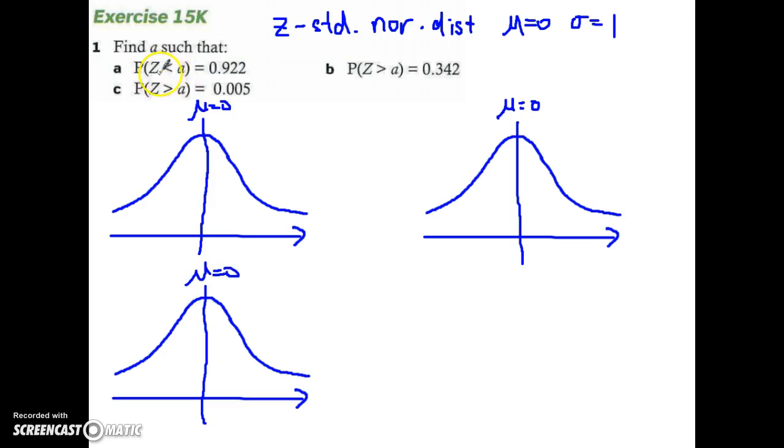So they want us to find the value of A, so that the probability is 0.922. So if you think about it, if my A is somewhere here, then it is A above the mean, A standard deviation above the mean. So let's take a look at which one, where should my A be? Should my A be on the right of the mean or on the left of the mean?